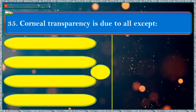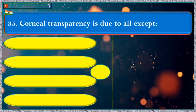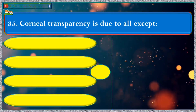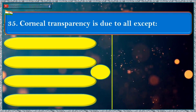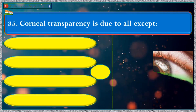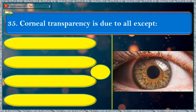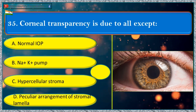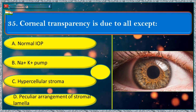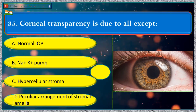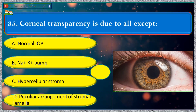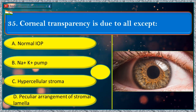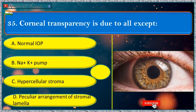Corneal transparency is due to all except: a. normal IOP, b. sodium ion-potassium ion pump, c. hypercellular stroma, d. peculiar arrangement of stromal lamella.